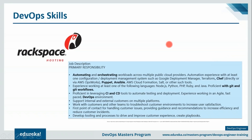Rackspace wants someone who can automate and orchestrate workloads across multiple cloud providers, with automation experience with at least one configuration or deployment management system such as Google Deployment Manager, Terraform, Chef, Puppet, or Ansible. He or she should have experience with at least one programming language like Node.js, Python, PHP, Ruby, or Java, and good hands-on knowledge with Git and Git workflows.